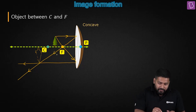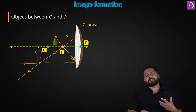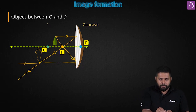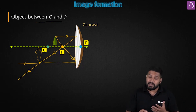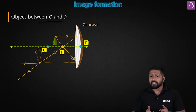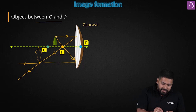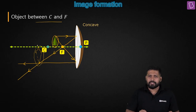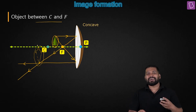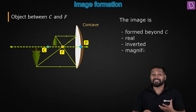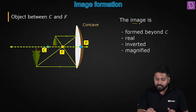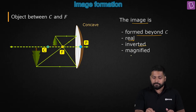You have one reflected ray here and another reflected ray here. This is where they are meeting and this is how you obtain the image. In this case, the nature of the image: where is the object? It's between C and F. Where is the image located? The image is located beyond C. Is it real? Yes, it's a real image, and real images are inverted. And when you look at the size, the image is magnified — so the size of the image is greater than the size of the object. The image is real, inverted, and magnified.